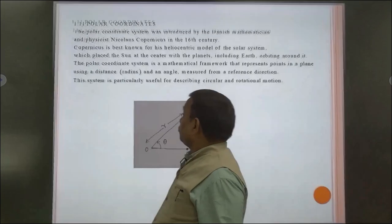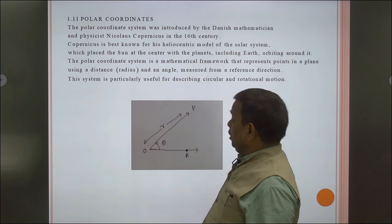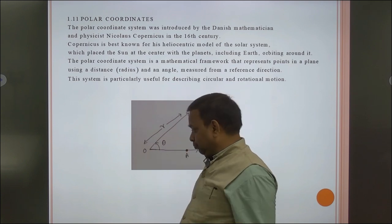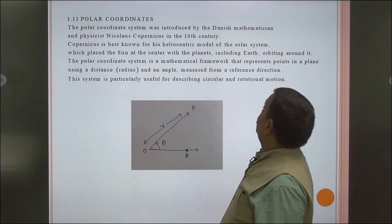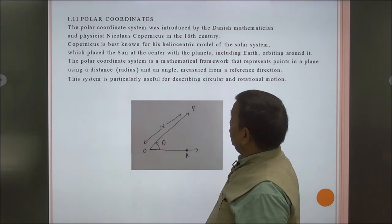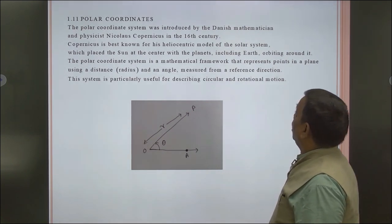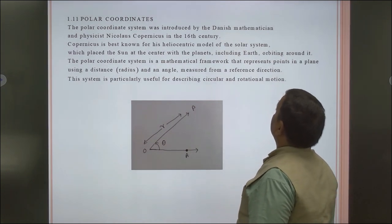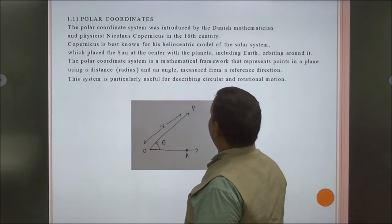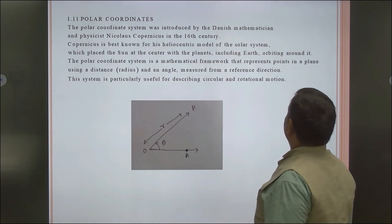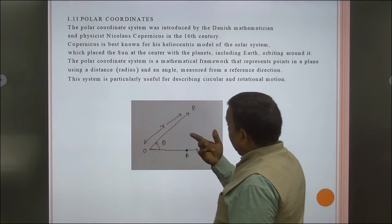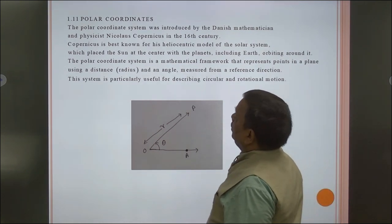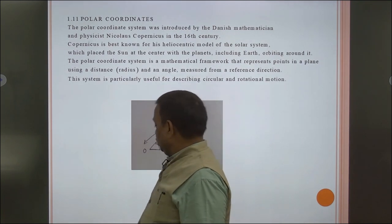Now let us look at the polar coordinate system. The polar coordinate system was introduced in the 16th century. Copernicus, known for his heliocentric model of the solar system, placed the sun at the centre with planets including Earth orbiting around it. The polar coordinate system is a mathematical framework that represents points in a plane using distance from a fixed point and an angle measured from a reference direction. The system is particularly useful for describing circular and rotational motion.